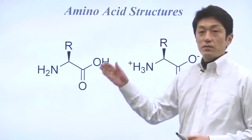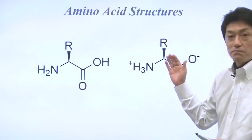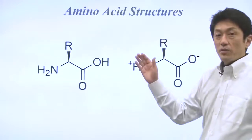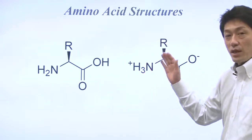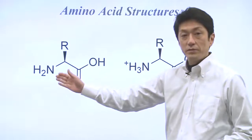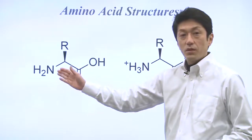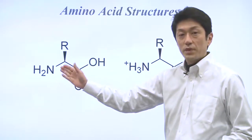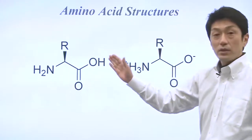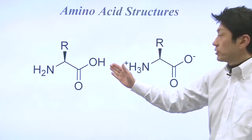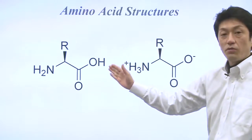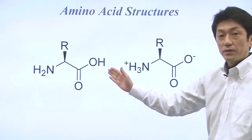Here is the general structure of amino acids. Each amino acid has an amino group on one terminal end, and a carboxylic acid group on the other terminal end.